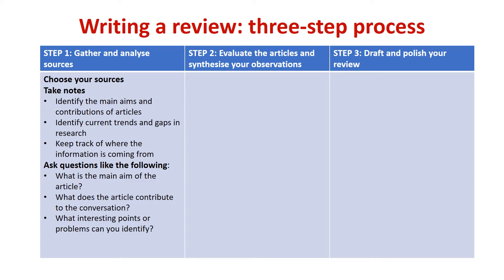By now you're familiar with the structure of a scientific article and have done basic analysis, so you're quite ready to move to the next level: synthesizing observations from a number of studies. The task can be challenging, and to make it easier it may help to think of it as a three-step process. The first step is gathering and analyzing your sources, the second is evaluation and synthesis, and the third is drafting and polishing.